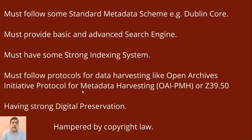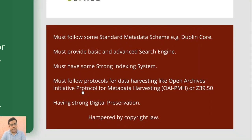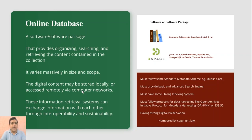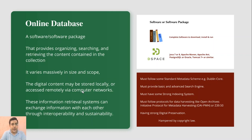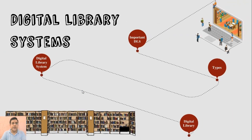Most importantly, a digital library system must comply with copyright law. It also varies massively in size and scope — a digital library system must scale massively in size and scope for future needs, potentially in terabytes. Digital content may be stored locally or accessed remotely via computer network — they can run on localhost or over the internet. These information retrieval systems can exchange information with each other through interoperability and sustainability.